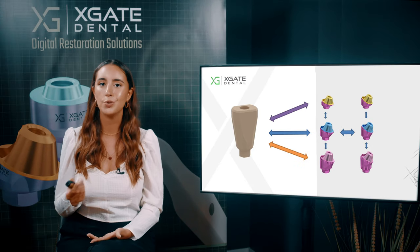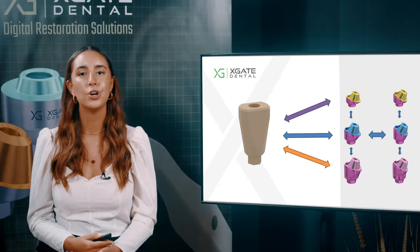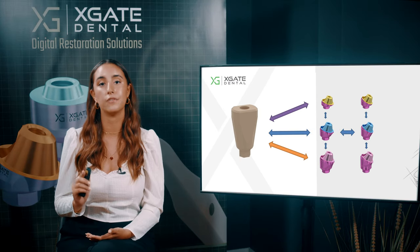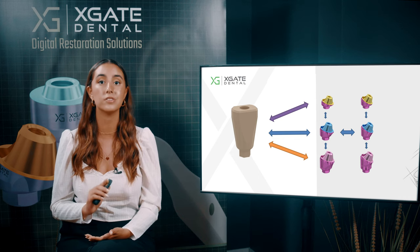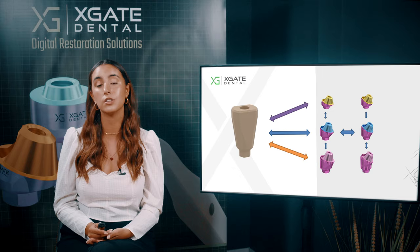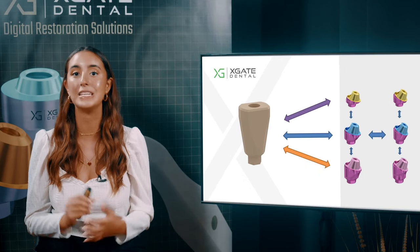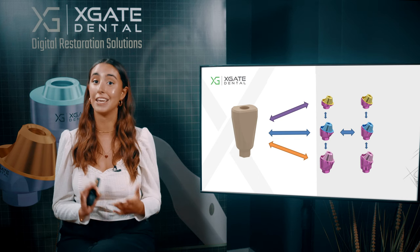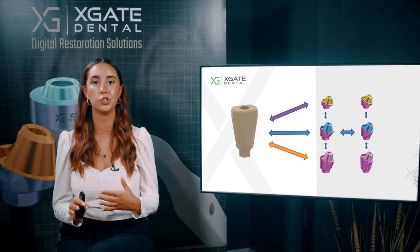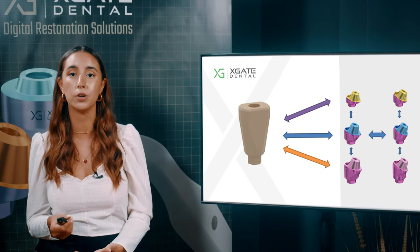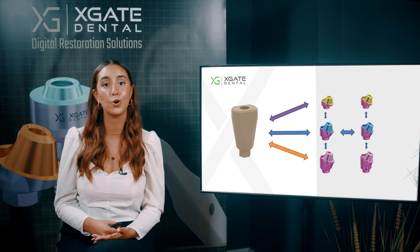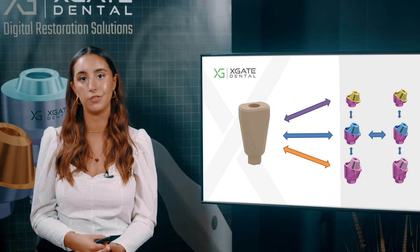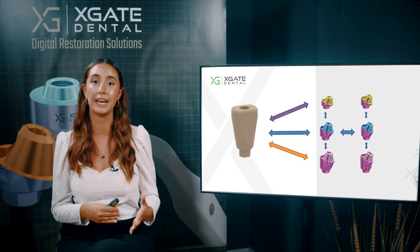Now let's talk about implant level scan abutments. The difference between multi-unit level and implant level scan abutments is that multi-unit level gives information according to the multi-unit — you can change between different types within the same category, but you can't switch, for example, from straight multi-units to angulated ones because you have no information about the hex orientation. If you took the impression of a straight multi-unit, you can't change to an angulated one. But if you don't know what type of multi-unit to use at all and you're using CAD/CAM, you need to take impressions on implant level, which gives you the hex orientation and implant height.